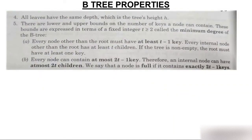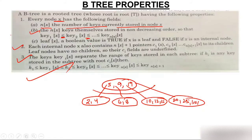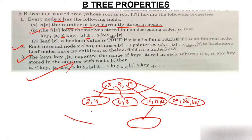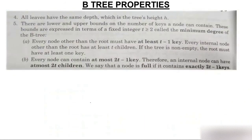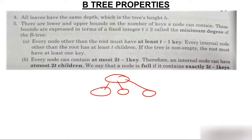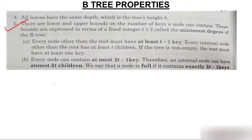The fourth property: all leaf nodes have the same depth. It should not be the case that any leaf is at a different level than another. If leaves are at different levels, it is not a B-tree. All leaf nodes must be at the same level.